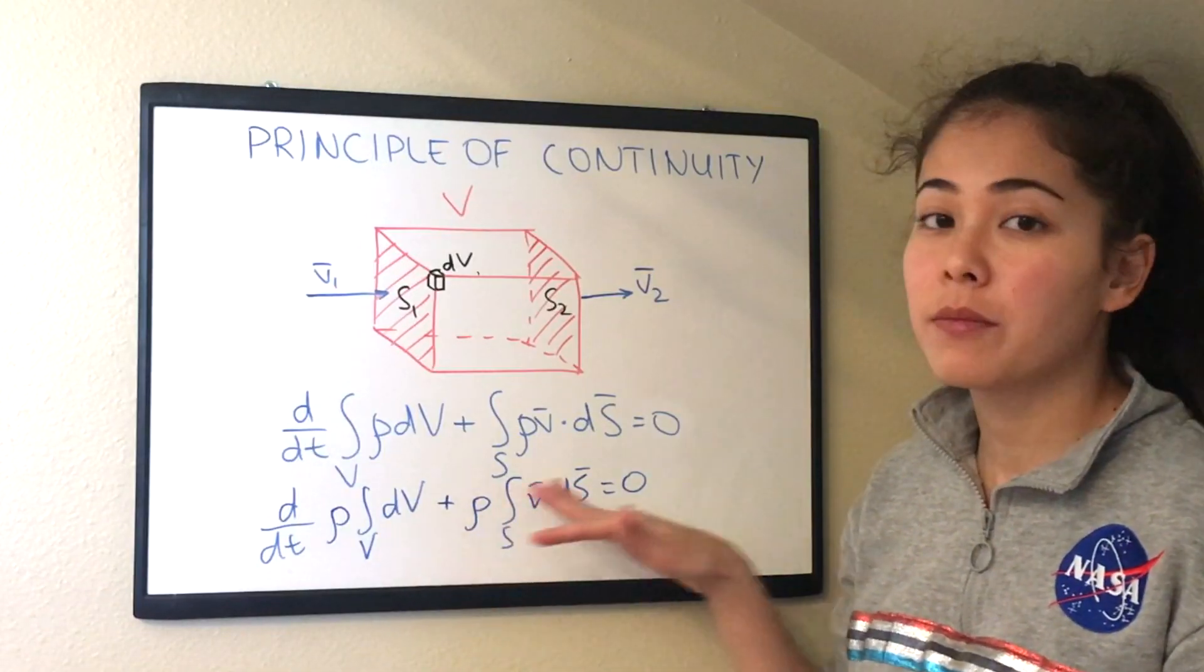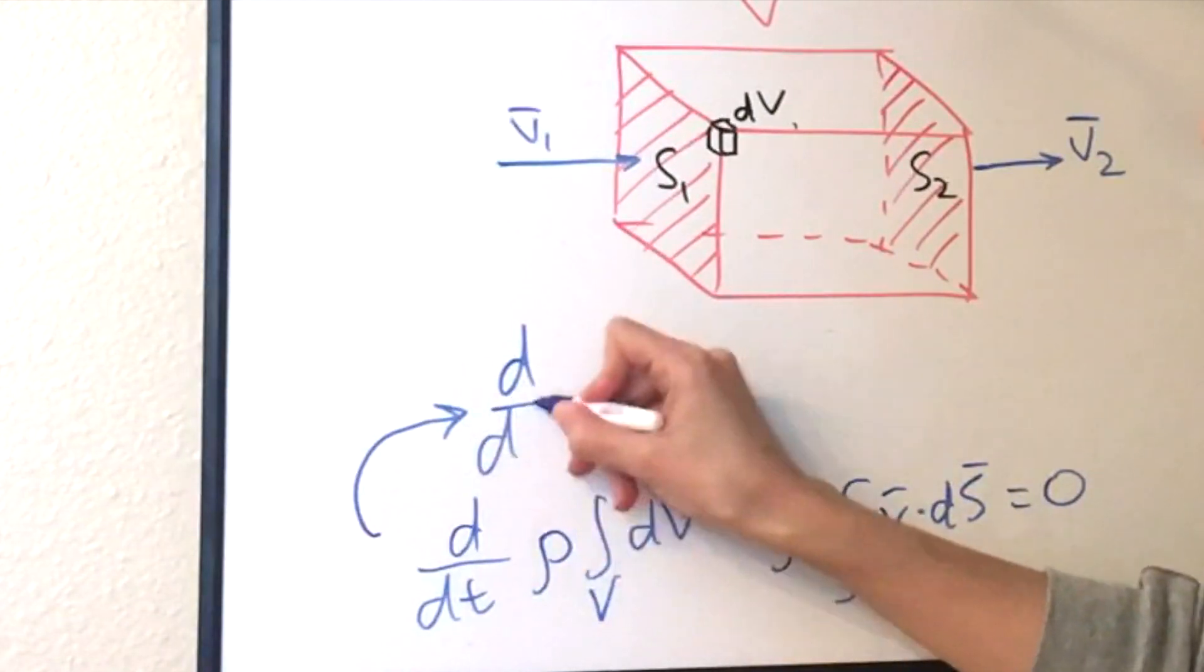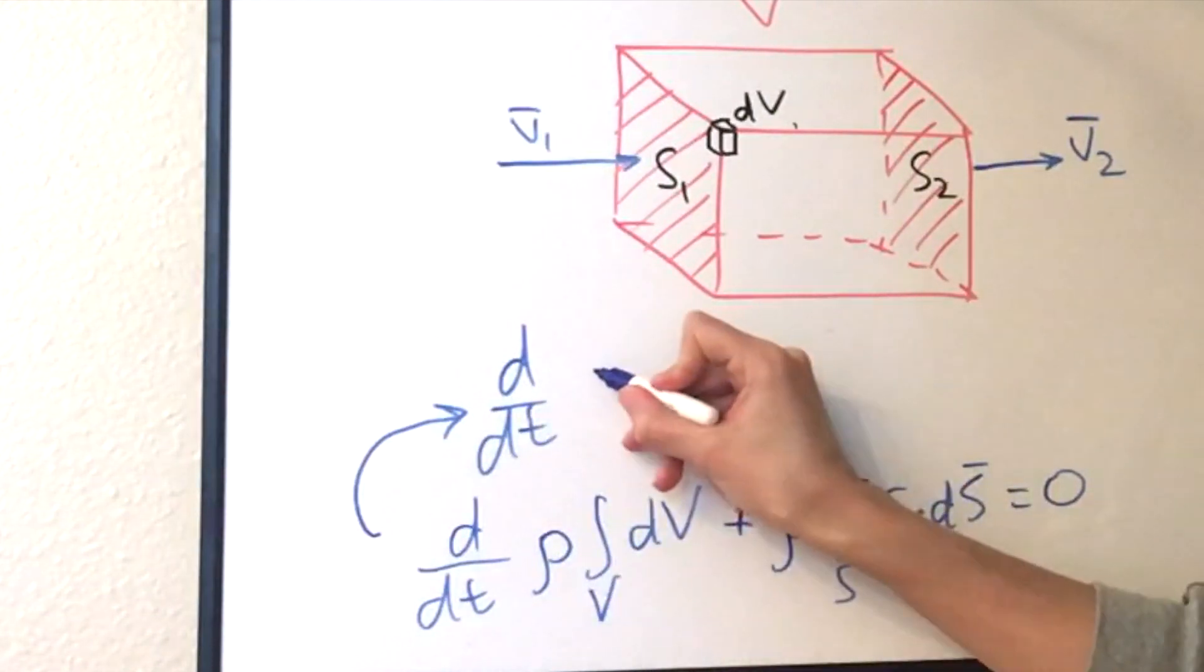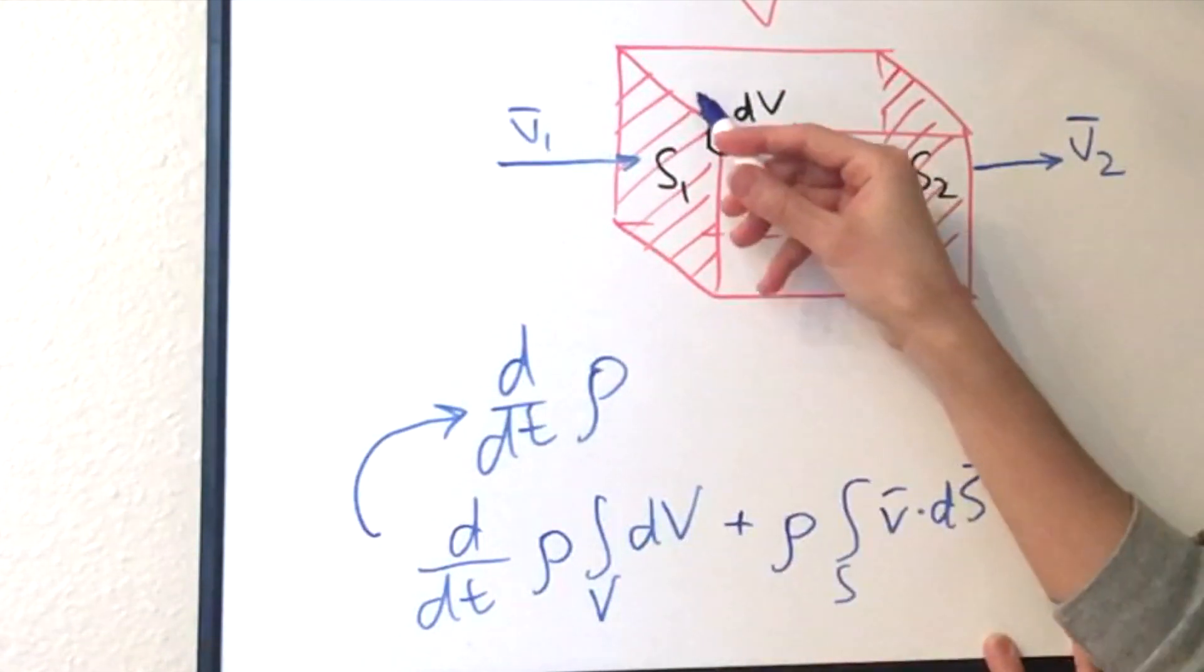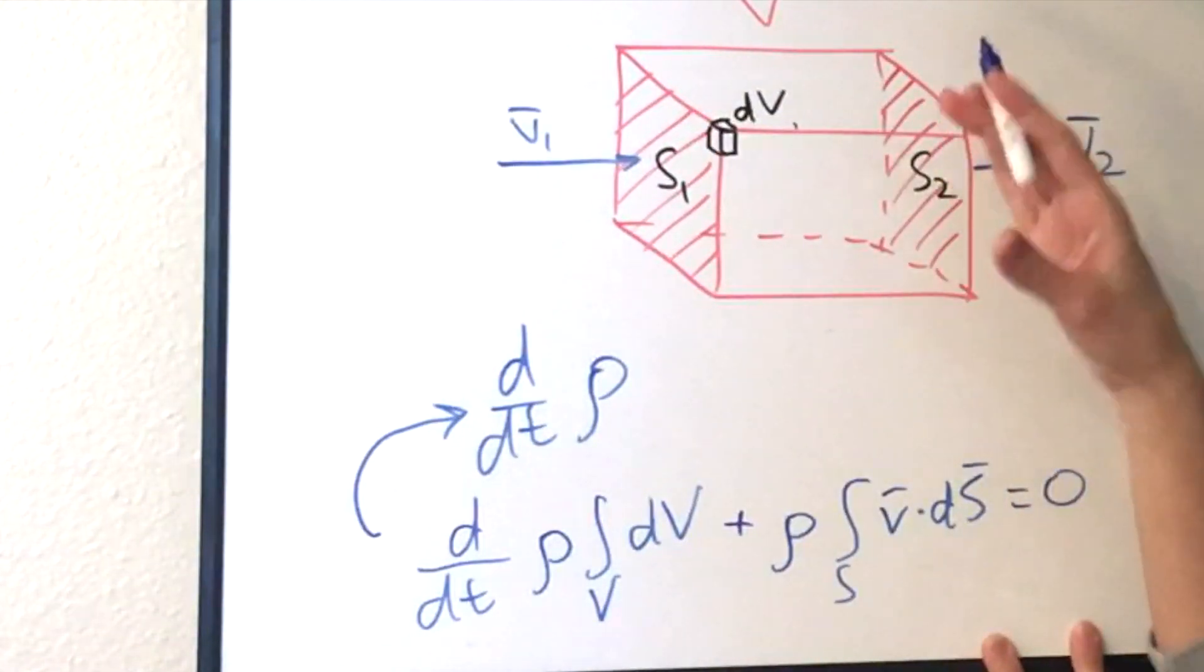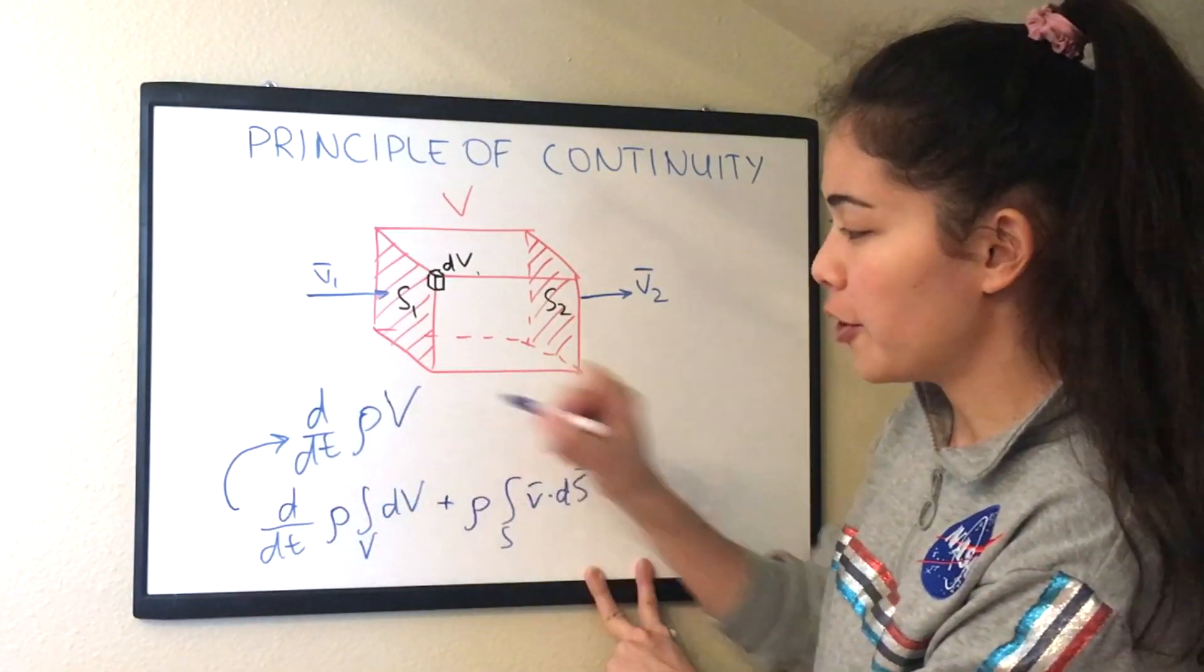The next step is to simplify it even more. The derivative with respect to time still stays there. Density stays there. But now we can get rid of the integral because the integral over the whole volume v over little parts dv will be just the whole volume v. So this is the first term.